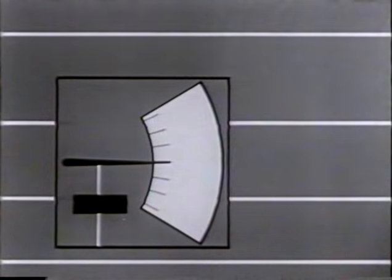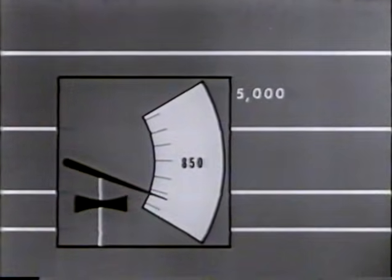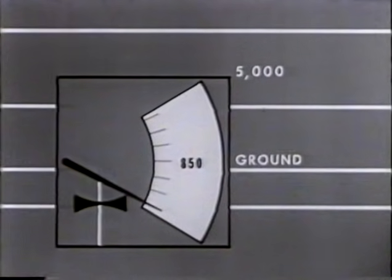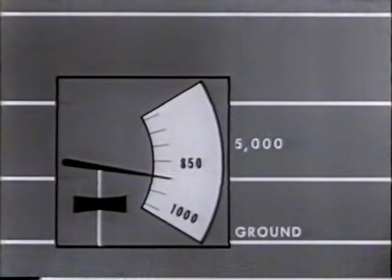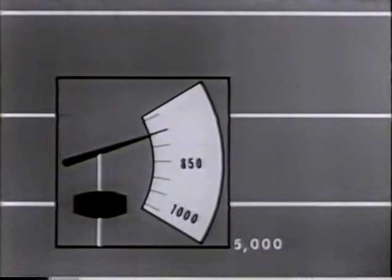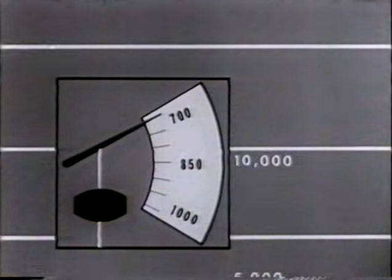These variations in pressure can be measured by fixing a pointer to one side of the can. By adding a scale calibrated in millibars, we can obtain pressure readings. At 5,000 feet, the pressure is about 850 millibars. As we descend, the pressure increases. Near the ground, it is about 1,000 millibars. Ascent causes a decrease in pressure. At 10,000 feet, it is about 700 millibars.